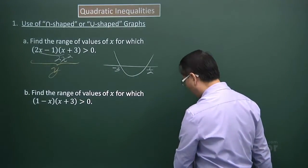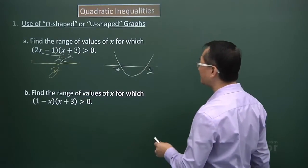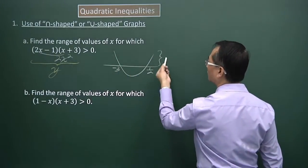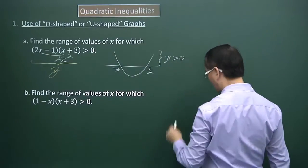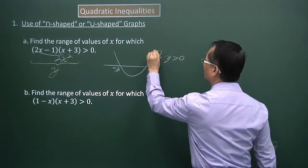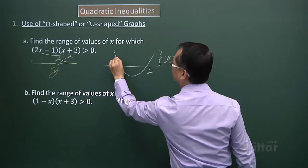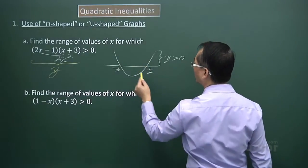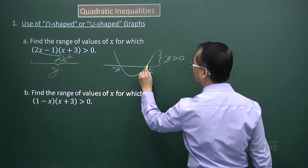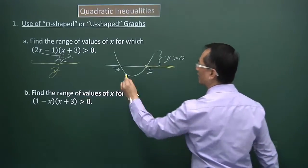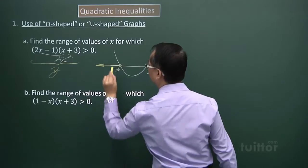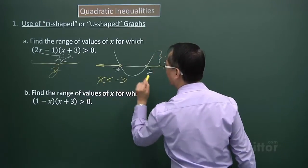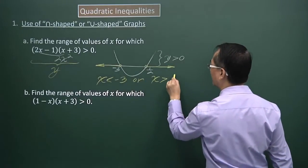The product of these two factors represents Y, and where we have Y greater than zero, it means we're looking at the portion of the curve above the horizontal line. The corresponding X values for this part of the graph are represented on the number line, and the result would be X less than negative three or X greater than one half.